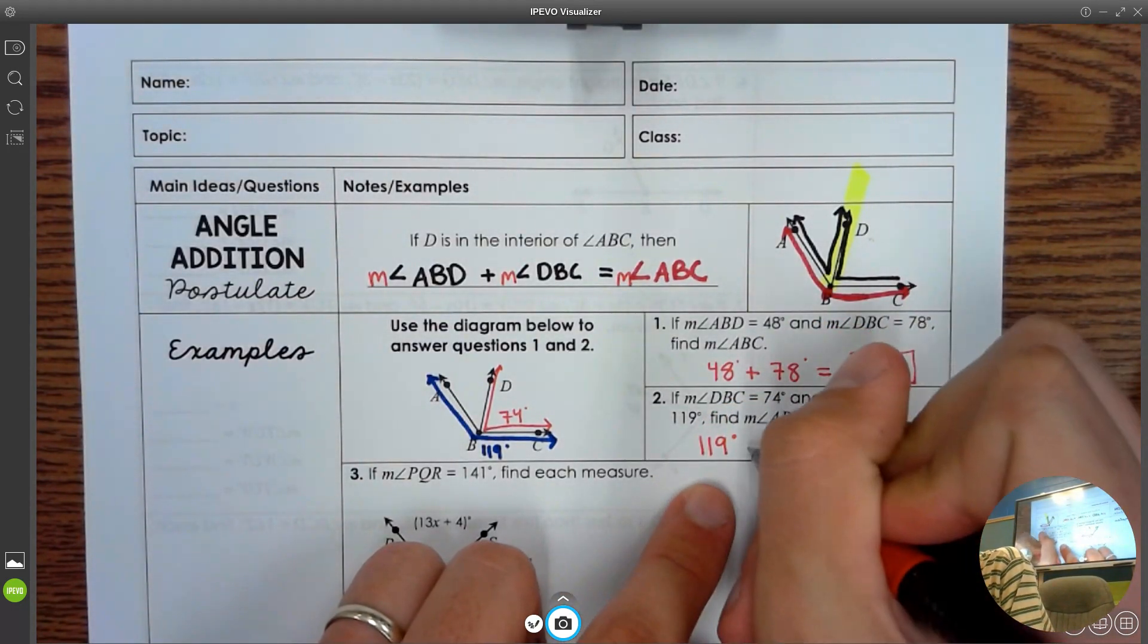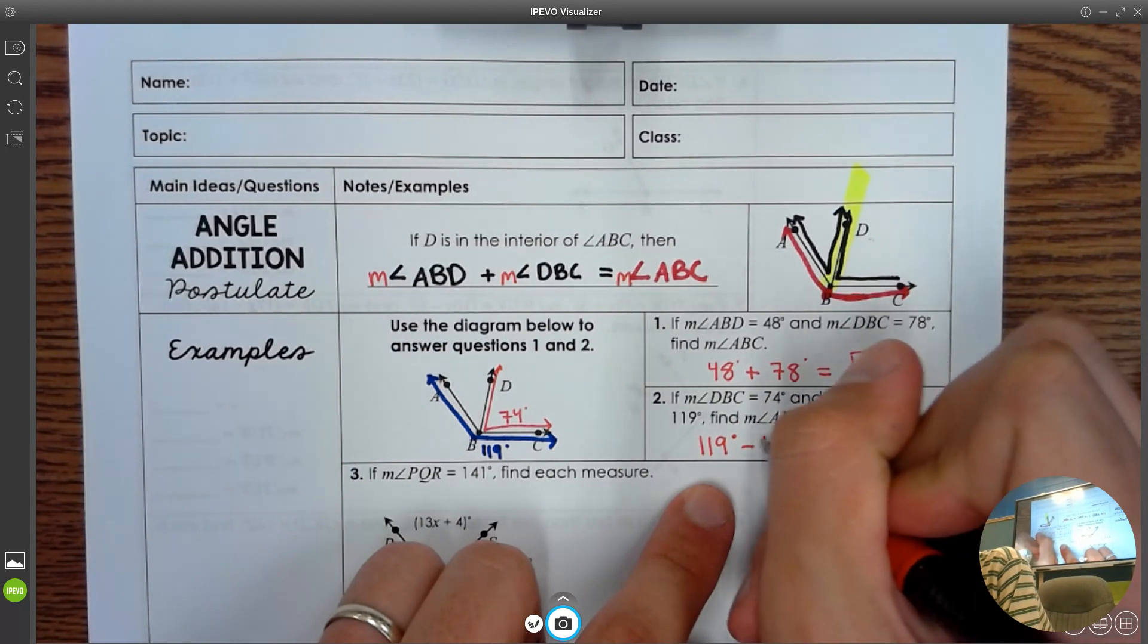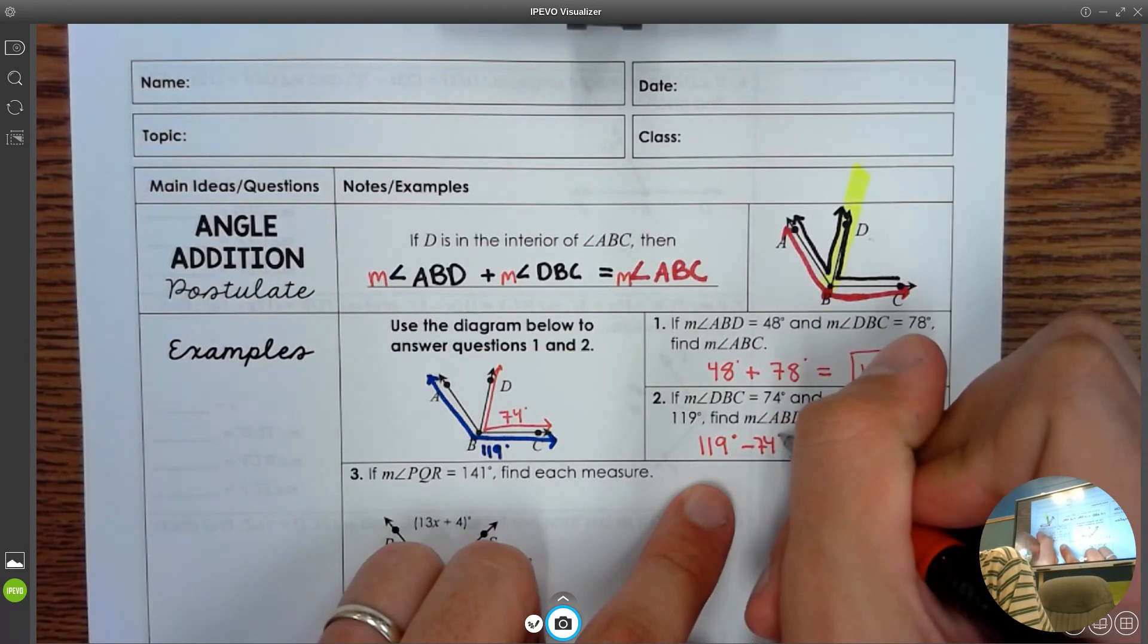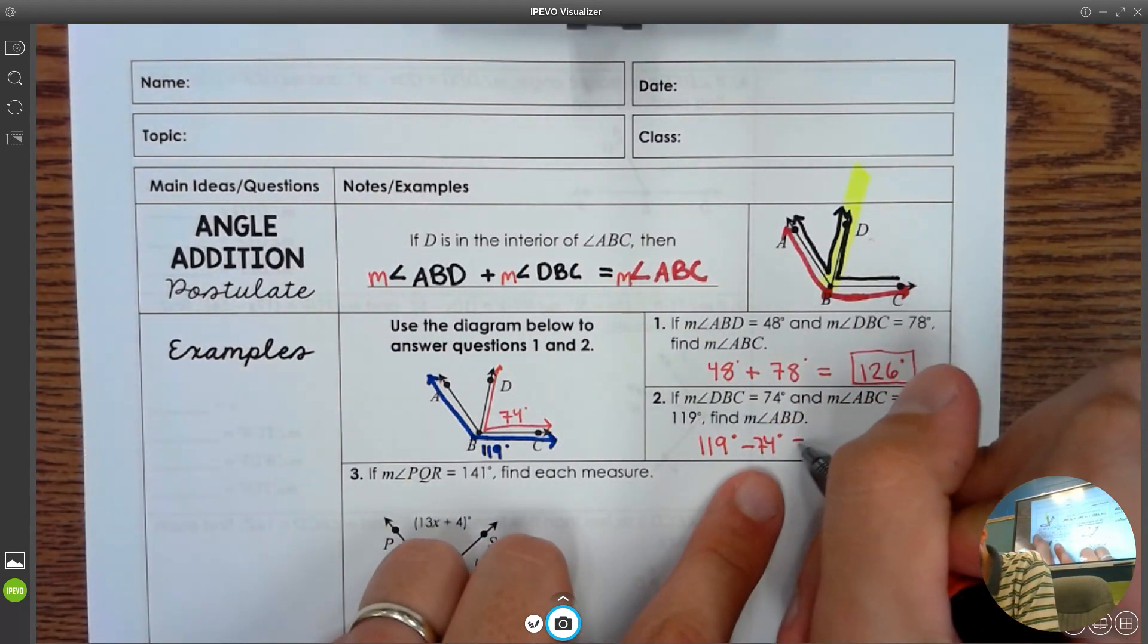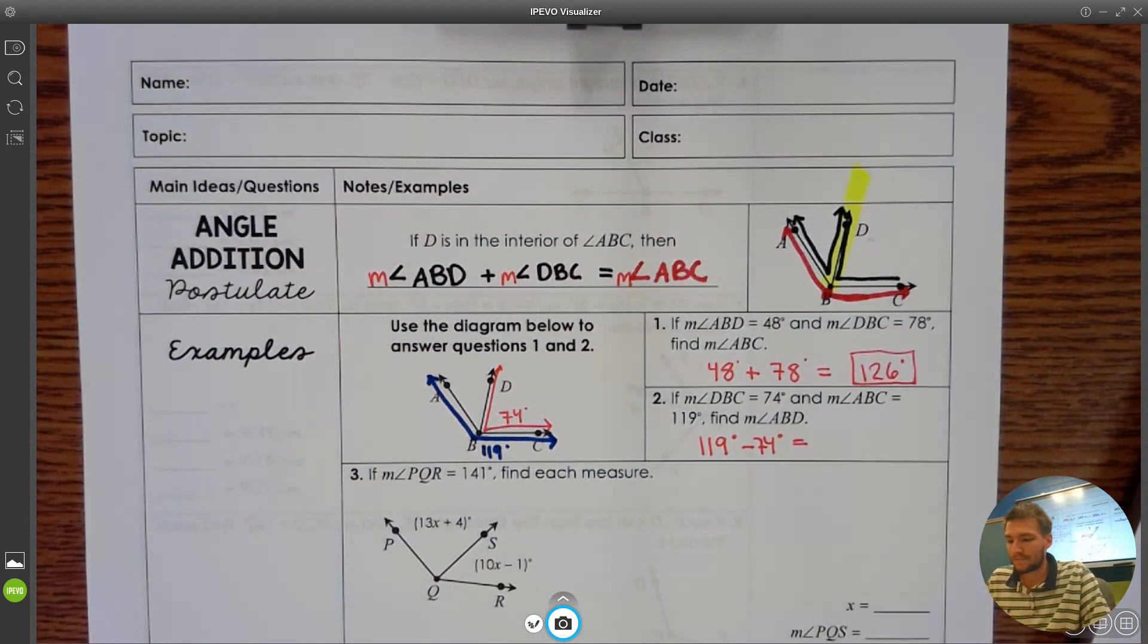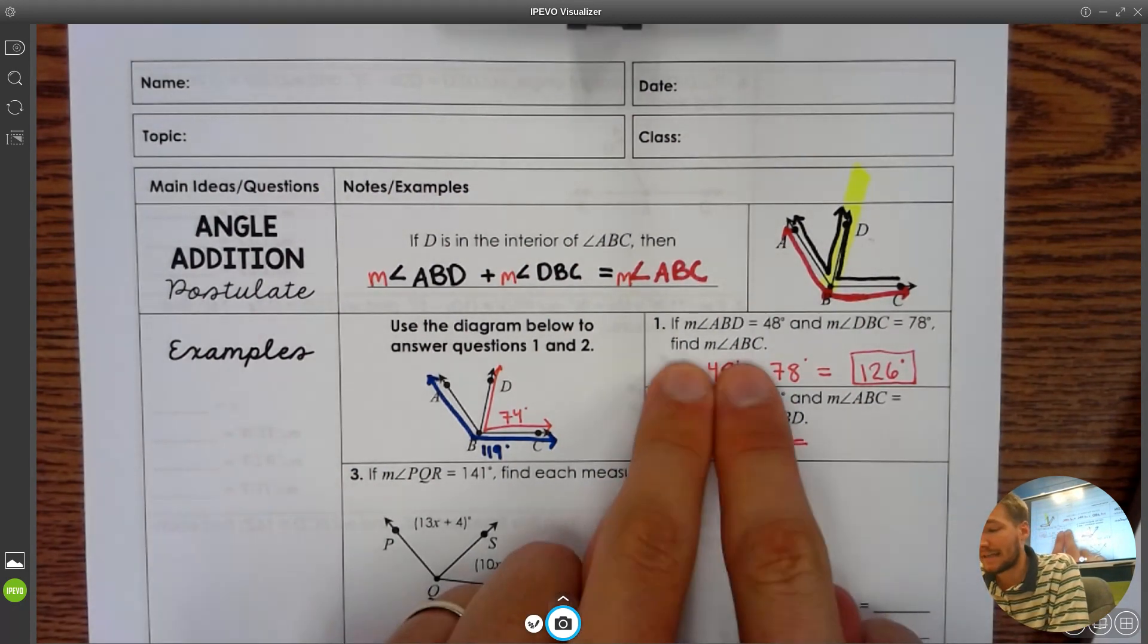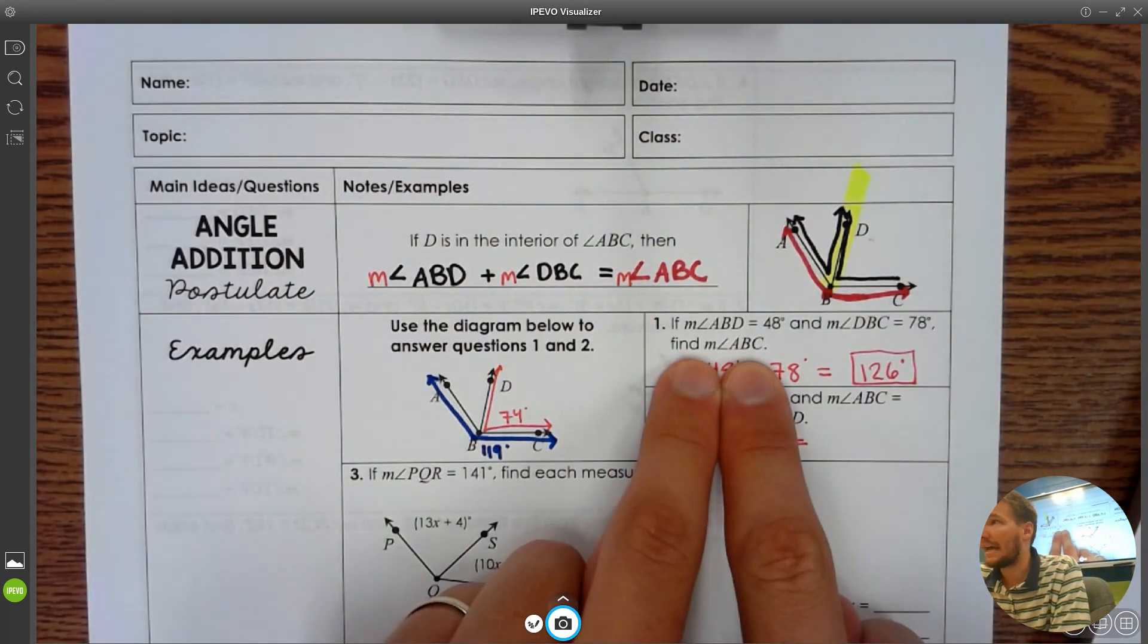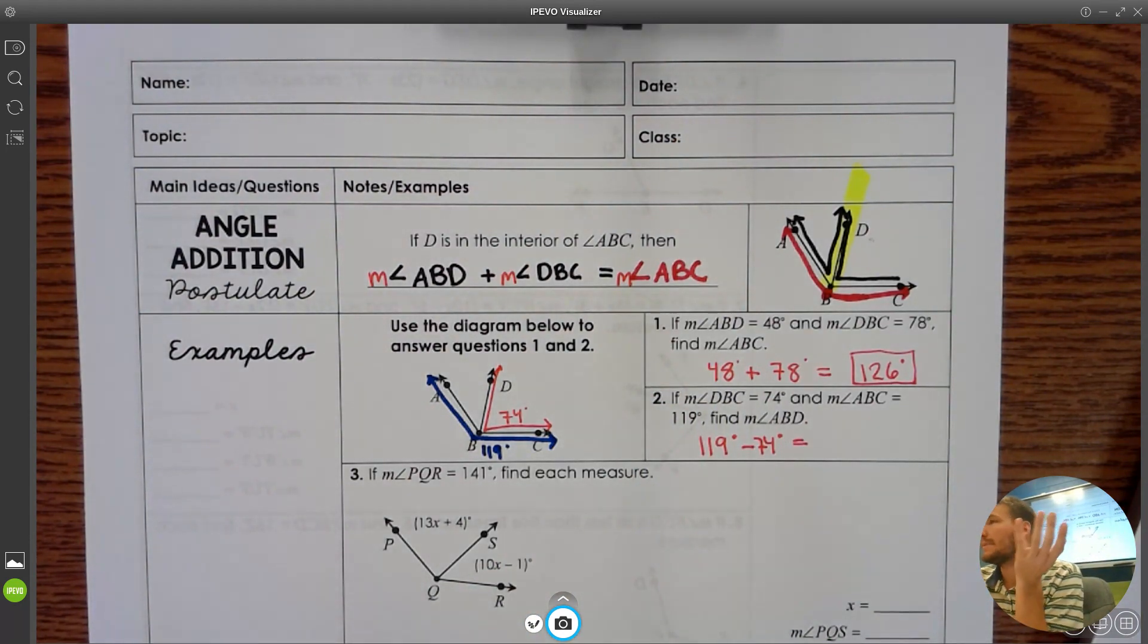119 subtract 74. For number one, they said what is ABC? ABC is the big thing, right? So we got to add up the two parts to make the big one.